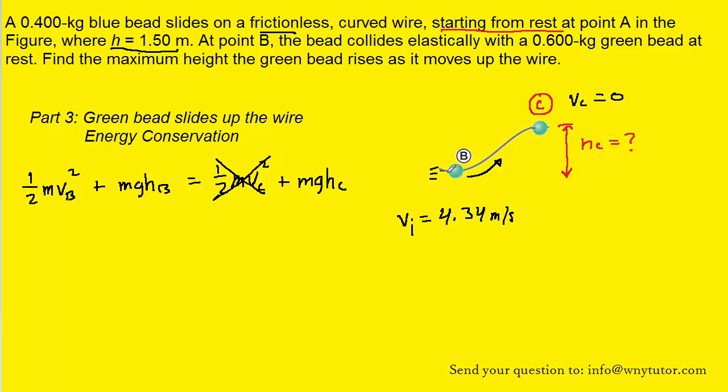Down here at point B, before the bead travels up the wire, we can see that the height is zero. And since the height is zero at that point, that will drop out this term.